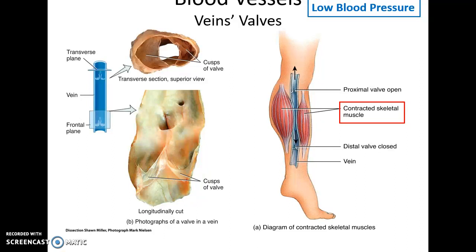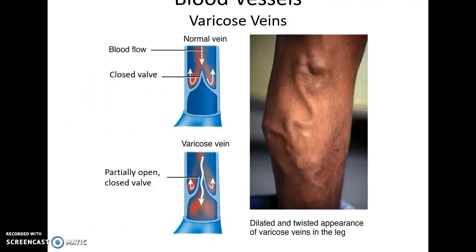To move blood toward the heart, veins need to be positioned between skeletal muscles. When the muscles contract, they squeeze the veins, causing blood to move toward the heart. Breathing also helps — the expansion of the lungs pushes on the thoracic cage to squeeze veins, causing blood to flow toward the heart.